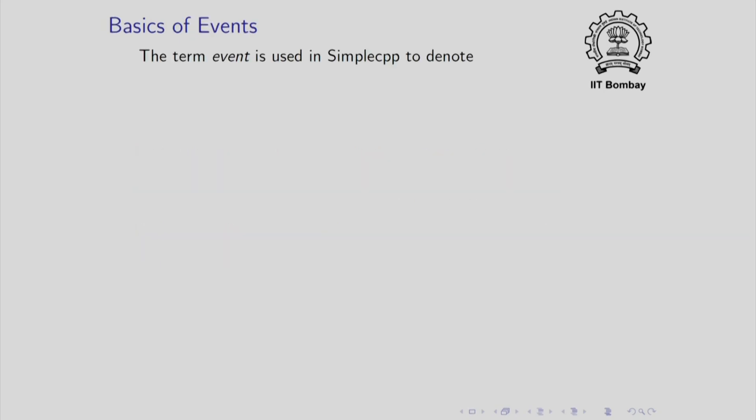The term event in SimpleCPP is used to denote a number of different things. For example, pressing a button of the mouse is an event, and releasing a button of the mouse is also an event. So when you press, it becomes one event, and when you release, it becomes another event. So we can actually separate clicks into pressing a button and releasing a button.